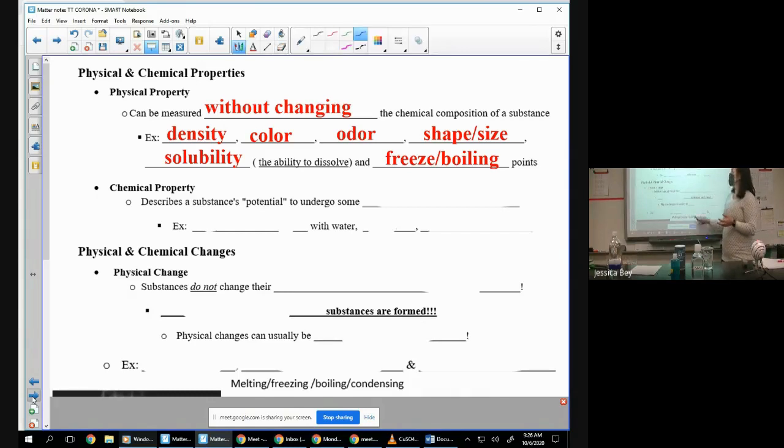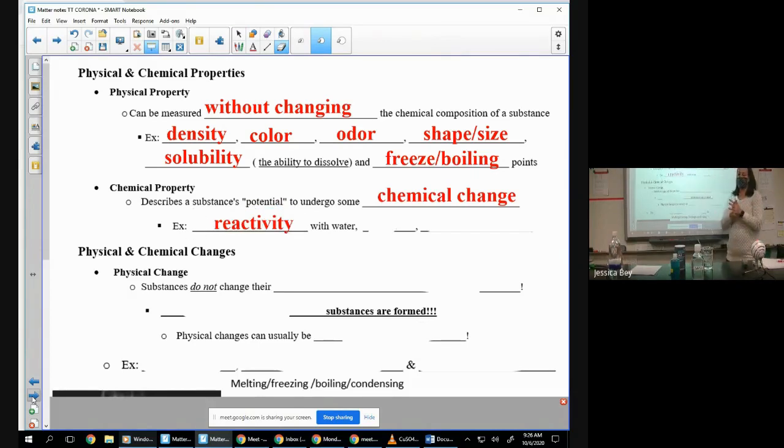A chemical property is a substance's potential to undergo a chemical change. A substance's potential to undergo a chemical change. So if something says, hey, it can react with hydrochloric acid, or it can react with oxygen, or it can react with zinc oxide, if you see the word react, that's going to tell you it's a chemical change. The pH of something is a chemical property. The fact that will burn or not, hopefully you know that the word flammable means that it's going to burn.